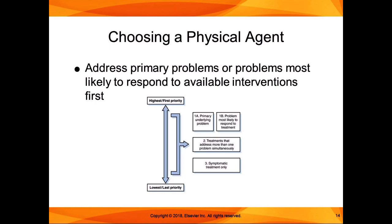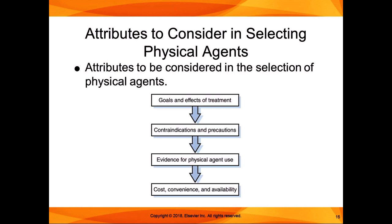When selecting physical agents, consider: What are the goals and effects of treatment — decrease pain, increase circulation, promote tissue healing? Are there any contraindications or precautions present? Is there evidence for use of this physical agent with this particular condition? We want to do things that are evidence-based. Also consider cost, convenience, and availability — there may be agents that would be helpful, but the patient won't have access to them.